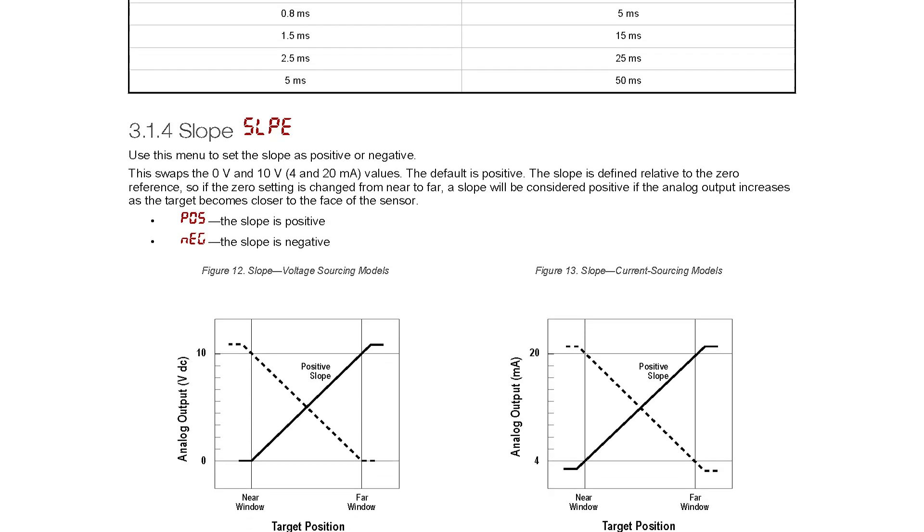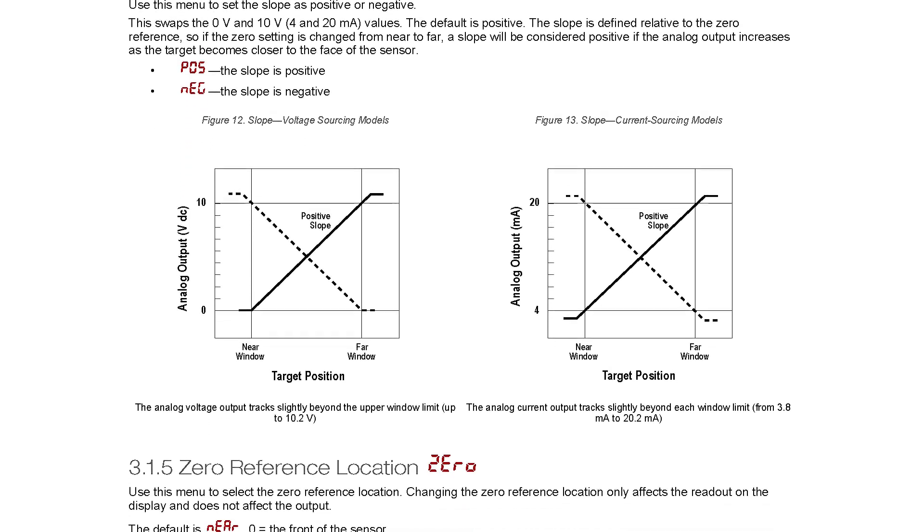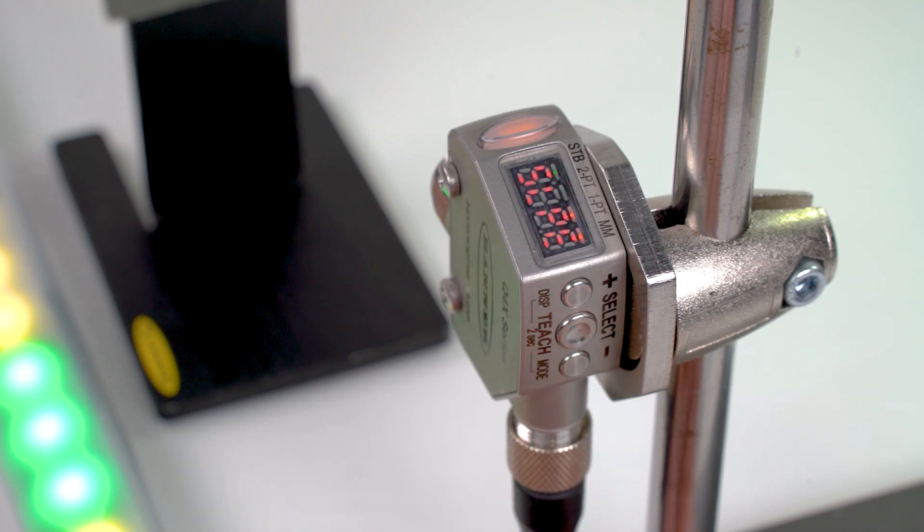If you need to change the slope of the analog signal, you can do so by navigating through the setup mode menu until you see SLPE. Select NEG to reverse the slope of the analog signal.